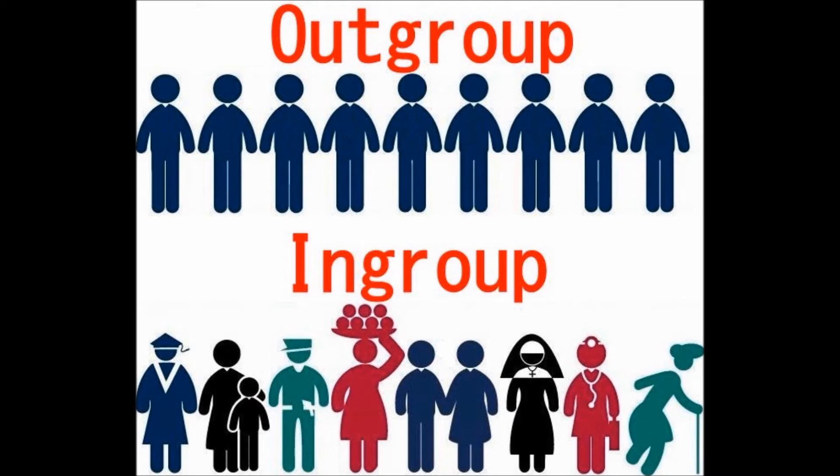When you stop and think about it, this makes sense. When looking at the members of the other group, you're focused on the attributes they share in common that make the members a group. On the other hand, when looking at the members of your own group, you already know what makes you a group, and instead you focus on the attributes that distinguish the members from each other.